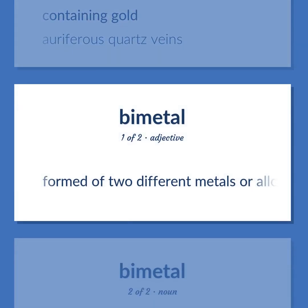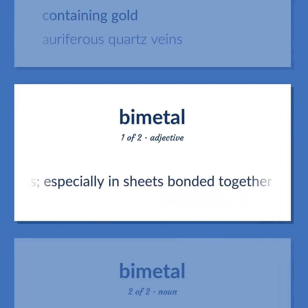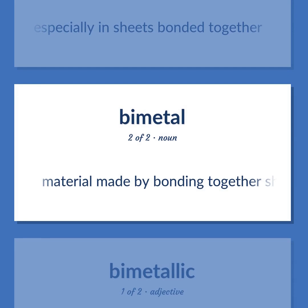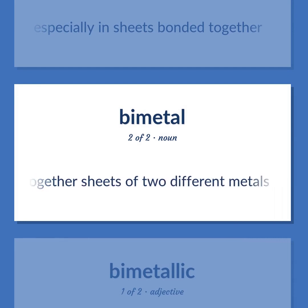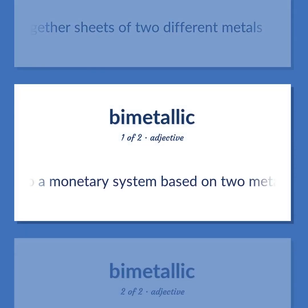Bimetallic (adj): formed of two different metals or alloys, especially in sheets bonded together. Bimetal (noun): material made by bonding together sheets of two different metals. Bimetallic (monetary): pertaining to a monetary system based on two metals.